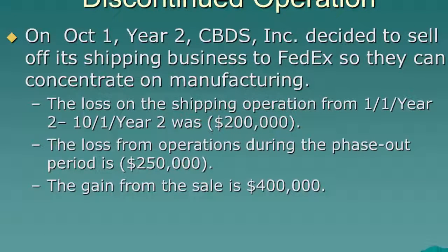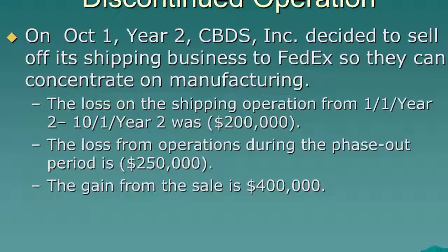One of the things we need to talk about before we go on are the two important dates in a sale of a discontinued operation. The first is the date of decision — the day we decided to get out of this line of business. In this case, that's October 1st when the company decided they were going to get rid of this business.